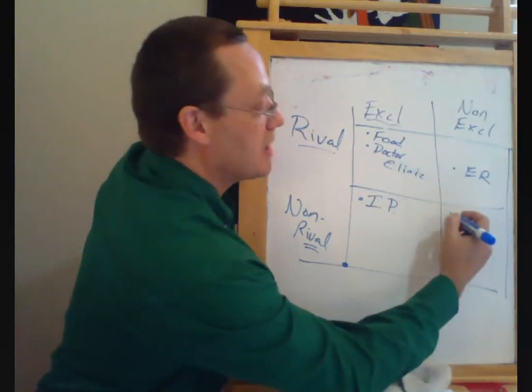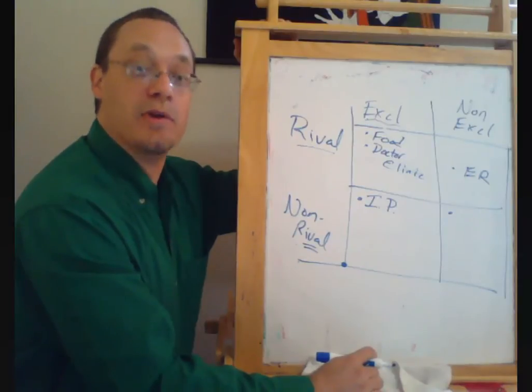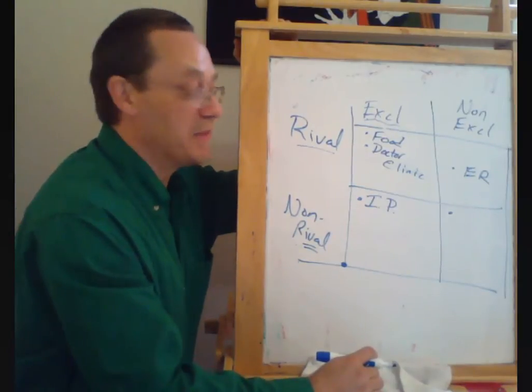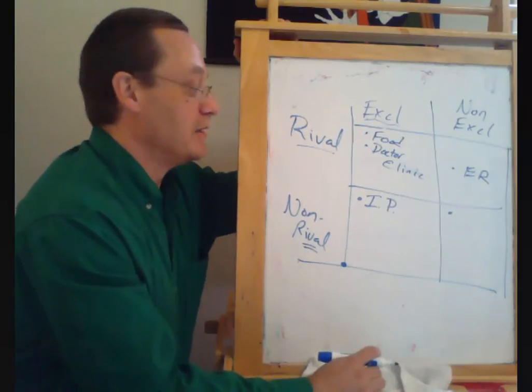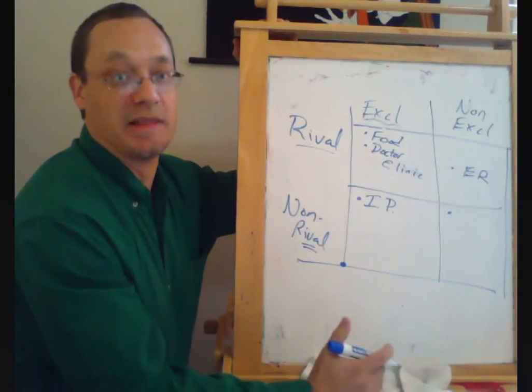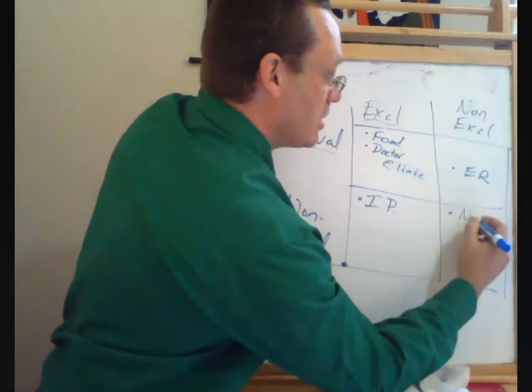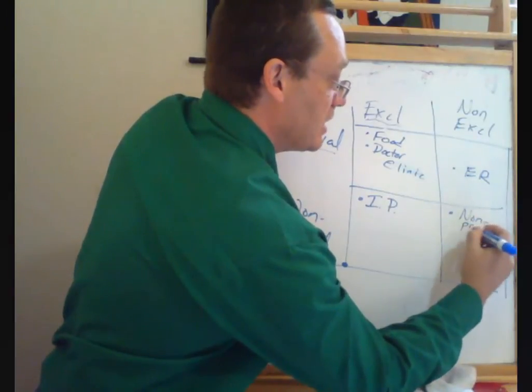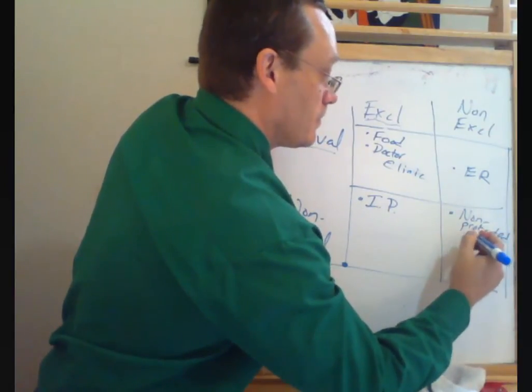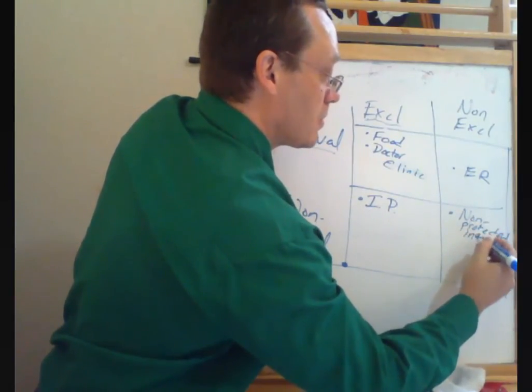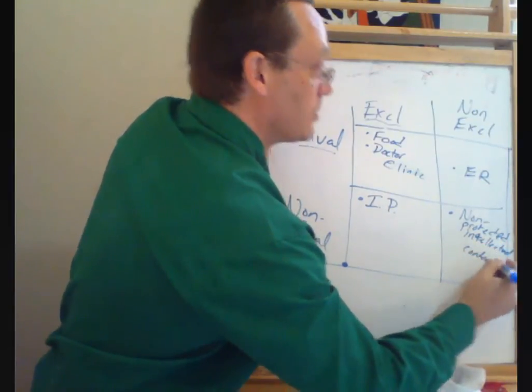If we had intellectual assets that there were no property rights on, something very general like the germ theory of disease or the laws of gravitation, you can't patent stuff like that. So non-protected intellectual content would go down in this corner.